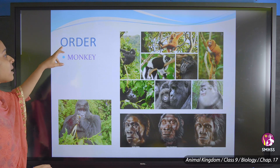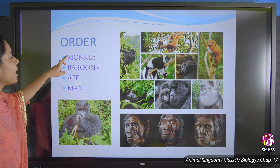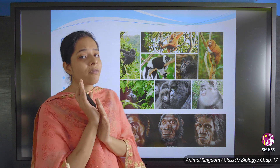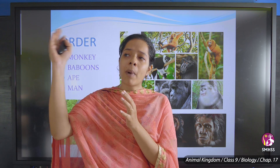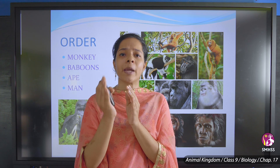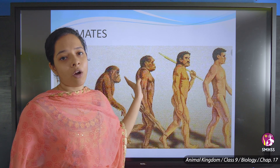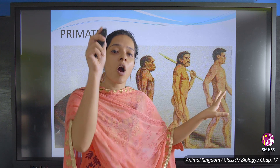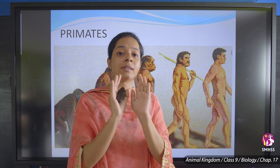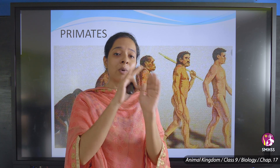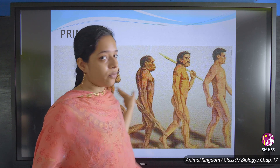The next category is Order. For example, monkey, baboons, ape, and man — human evolution proceeded from monkey to baboons to ape to man. They all come under the category called Primates. So man did not suddenly evolve as man; he evolved from monkey through baboons to ape to man.